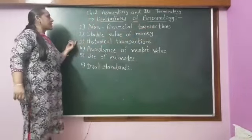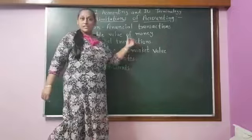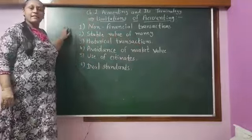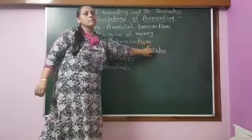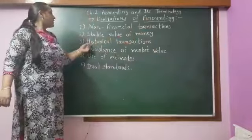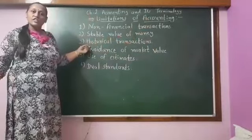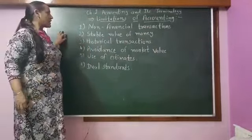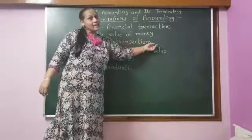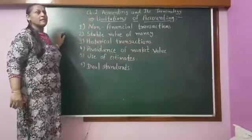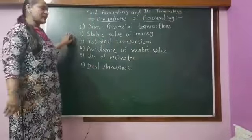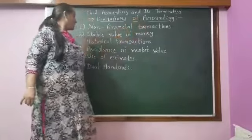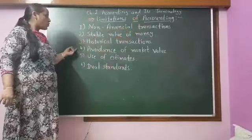The third limitation is historical transaction. When we are writing books of account, the transaction has already been done, and we are writing for the past. So accounting is a writing of history — we are writing books of account for historical data. Whatever history there is, that is what we are writing. But from history only, we can forecast the future, so that is why it is needed to write books of account for historical data.